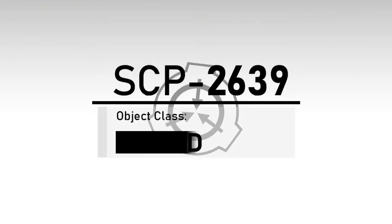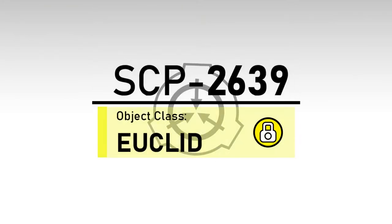Item number SCP-2639. Object class: Euclid, formerly Keter.